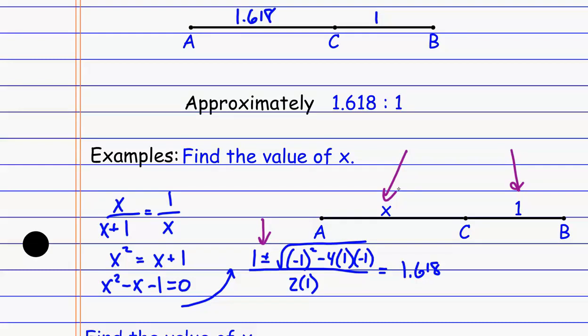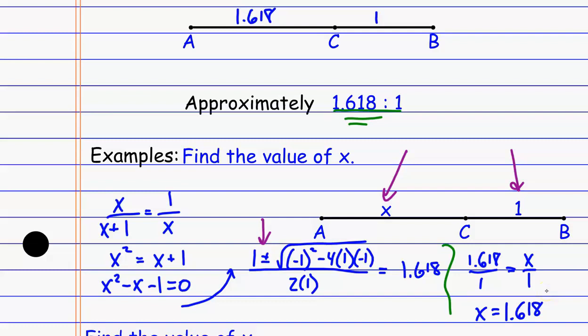The point of doing this is that if we wanted to find this exactly every time, we'd have to do the quadratic formula over and over again. So instead, we just memorize the approximation 1.618 and use it to set up a ratio. We say the golden ratio is 1.618 to 1, then set that equal to the long piece compared to the small piece, cross multiply and solve to shorten that process.